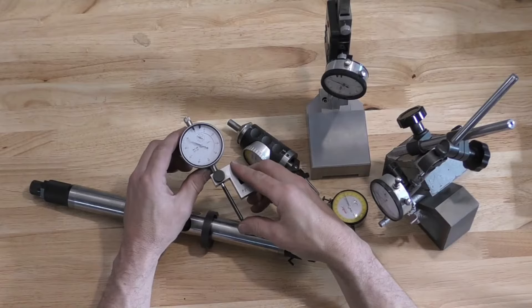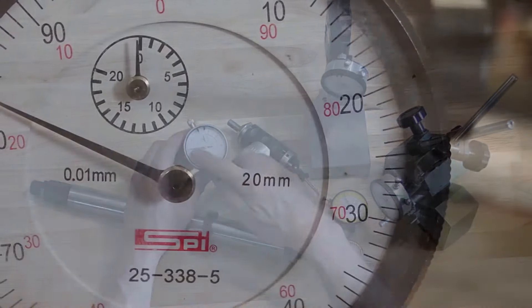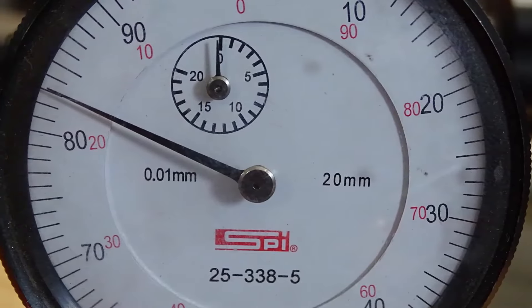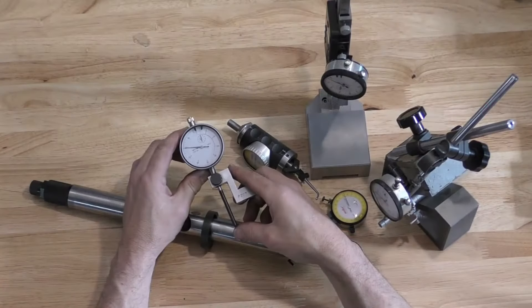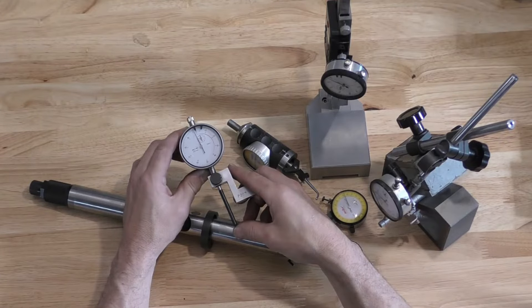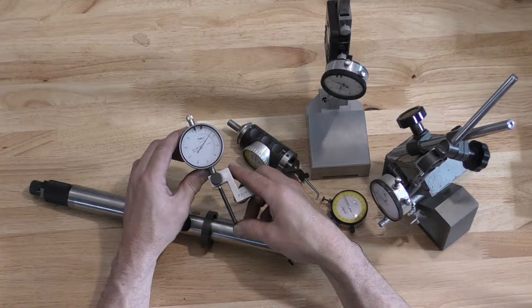There's two needles on a dial gauge. You have the large outer needle and then you have a smaller inner needle. On this particular dial gauge this has a 10 millimeter range. That means that 10 revolutions will equal 10 millimeters of travel.